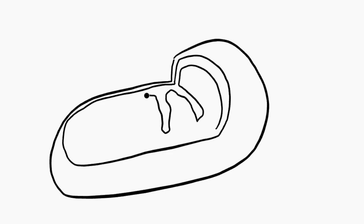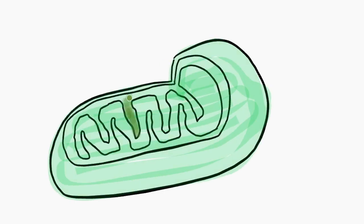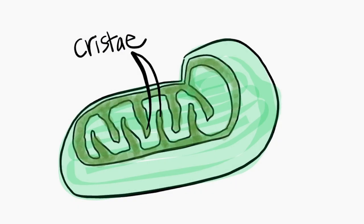Inside the mitochondria are these shelf-like structures called cristae. The cristae form an assembly line for enzymes to methodically break down glucose and convert that into ATP.